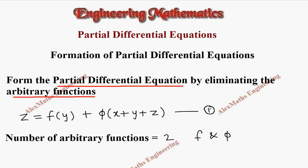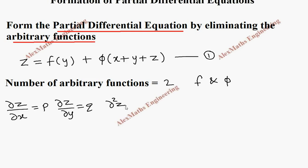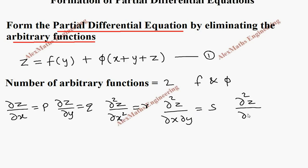Let's take this as the first expression. dou z by dou x is named as P, dou z by dou y is named as Q, dou square z by dou x square is named as R, dou square z by dou x dou y is named as S, and dou square z by dou y square is named as T — to eliminate the arbitrary function.